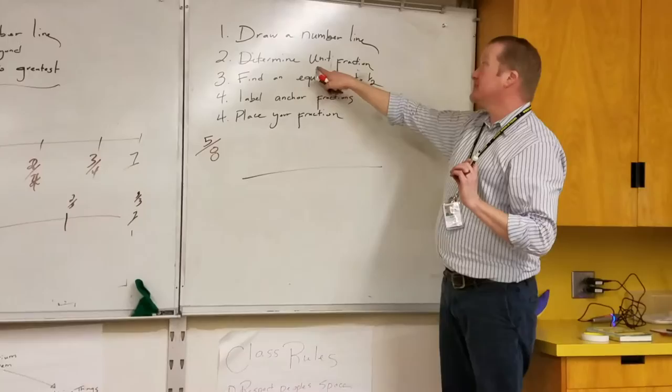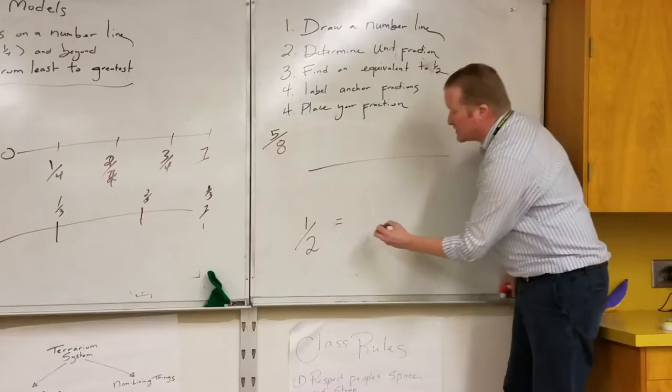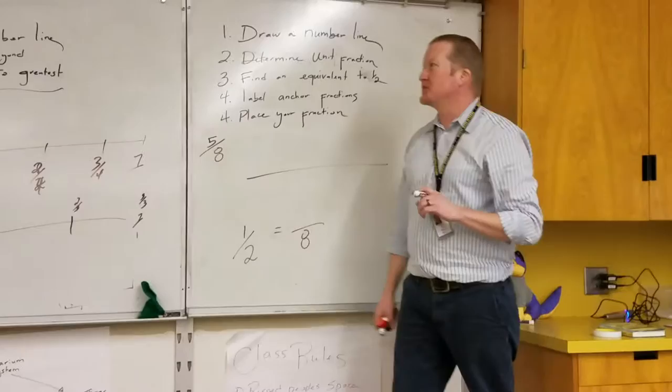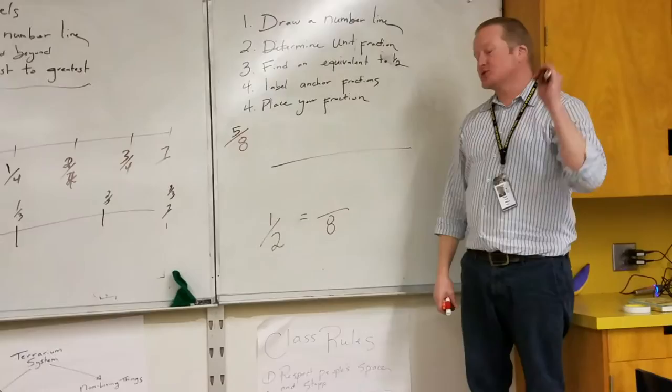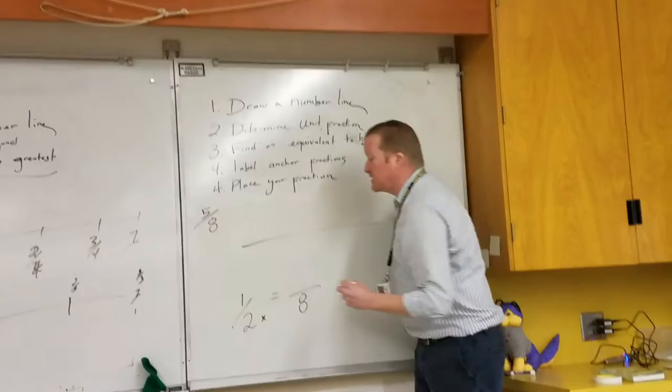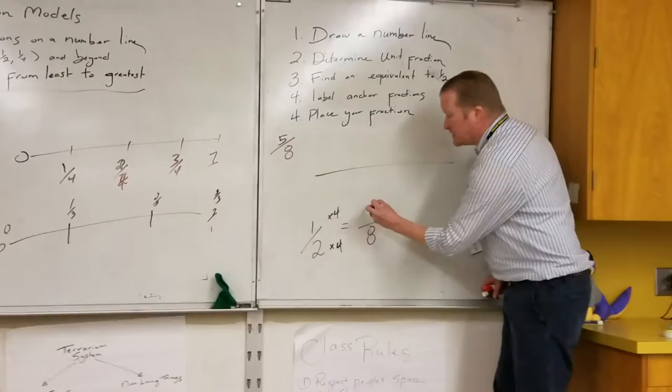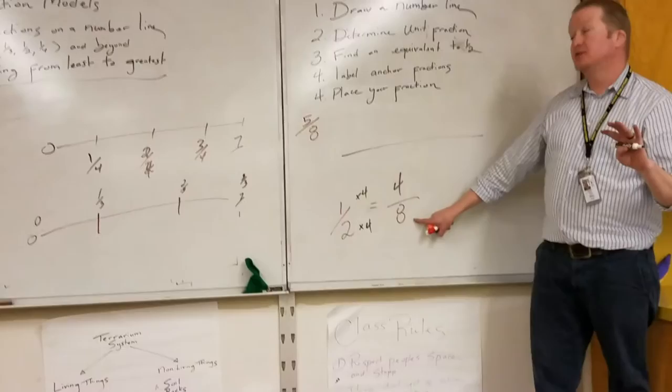Step three, find an equivalent to one half. Here is one half. Here is its equivalent amount of eighths. I did skip the part about making equivalent fractions, but one way that we do it is using the multiplication rule. Multiplication rule states that if you multiply a number, its denominator and its numerator times the same number, you will find an equivalent fraction. So, in this case, Ryoko, what am I going to need to multiply two by to create eight? Four. Four. Half to do it to the numerator as well.